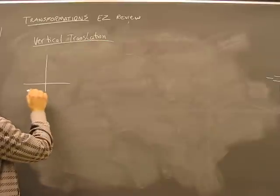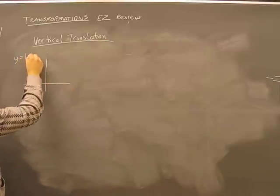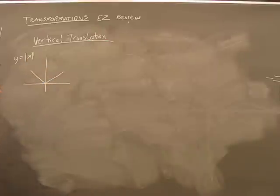Given a graph, a vertical translation—I'll use the graph y equals absolute value of x. We know that it looks like this. I'm not going to label it.